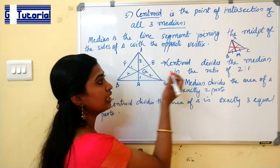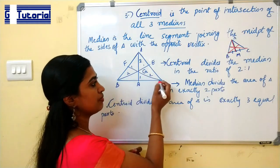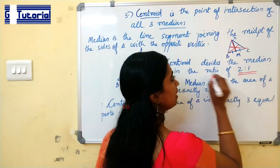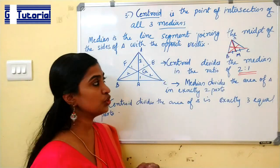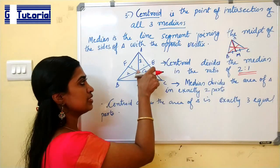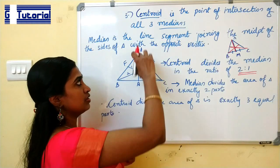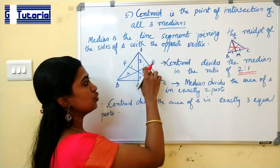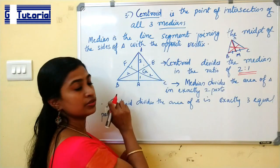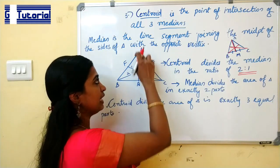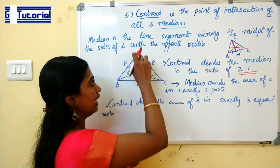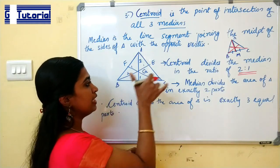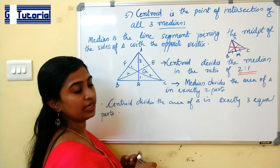The centroid divides each median in the ratio 2:1. For example, if AD is a median and G is the centroid, then AG is 2 and GD is 1. So the centroid divides the median AD in the ratio 2:1. This applies to all three medians of the triangle.